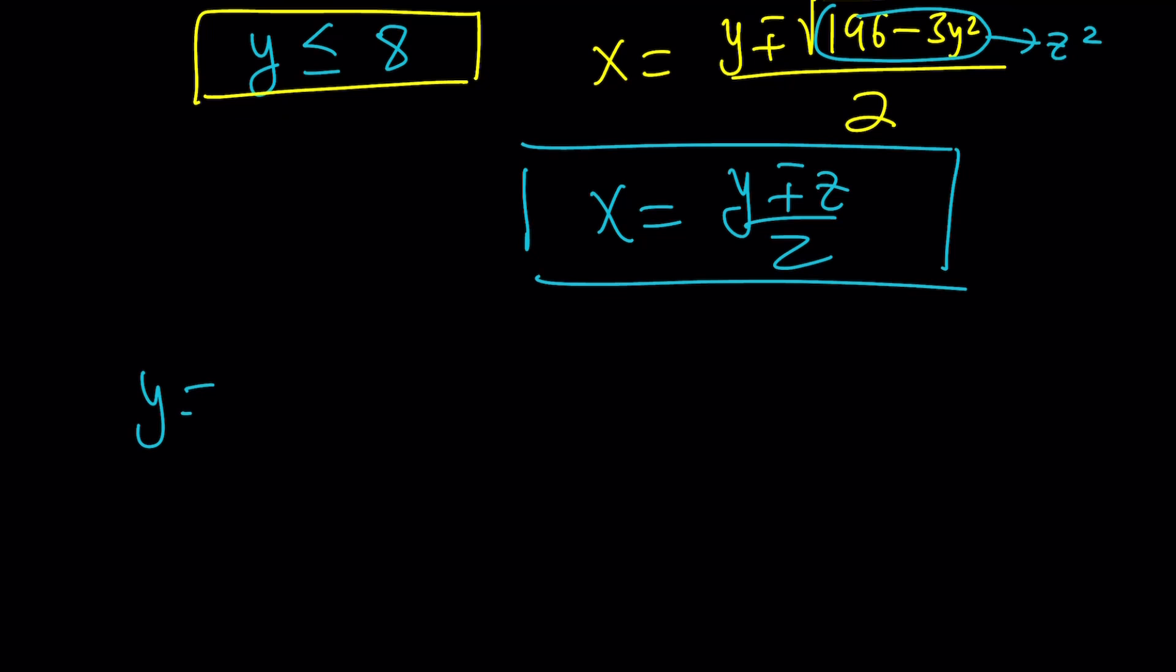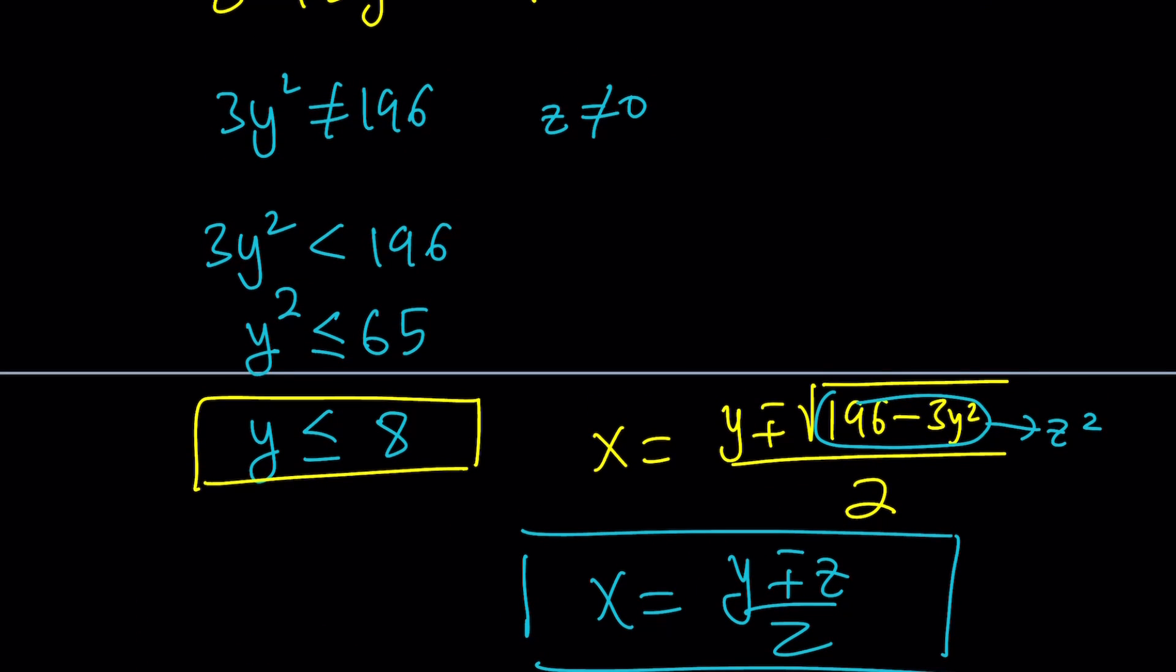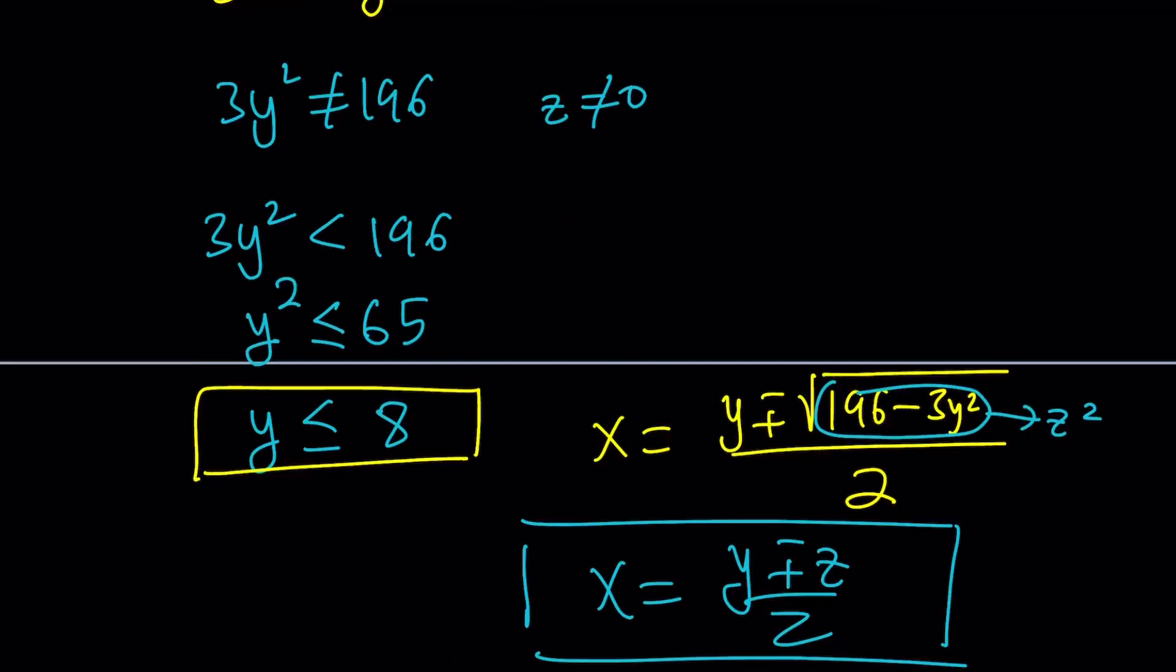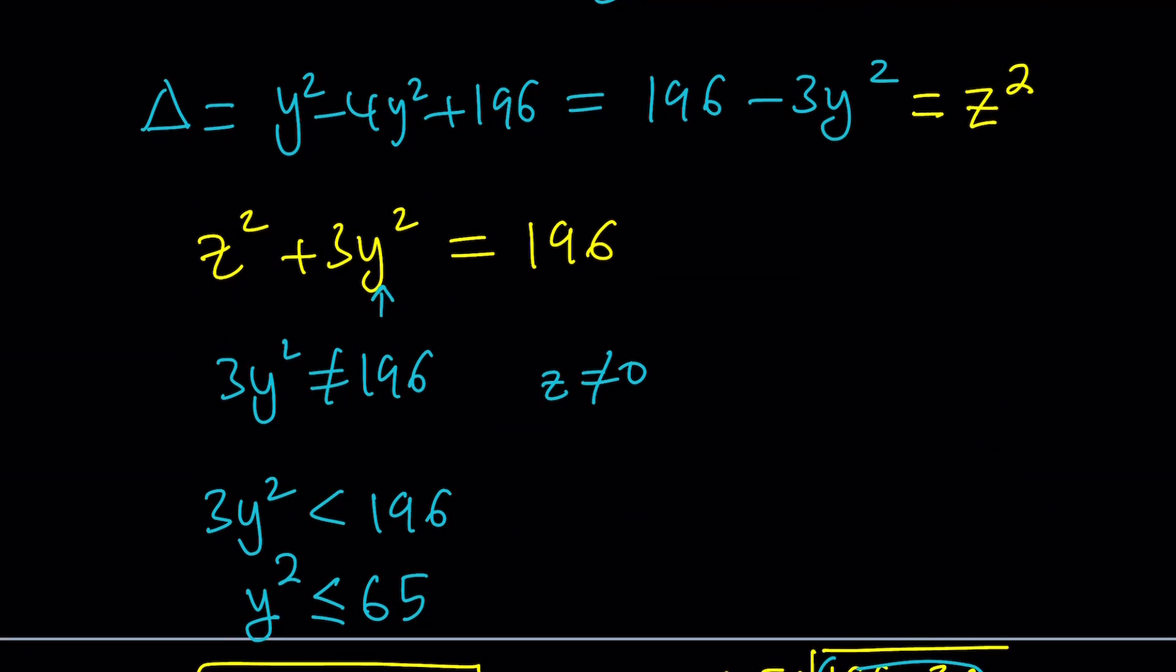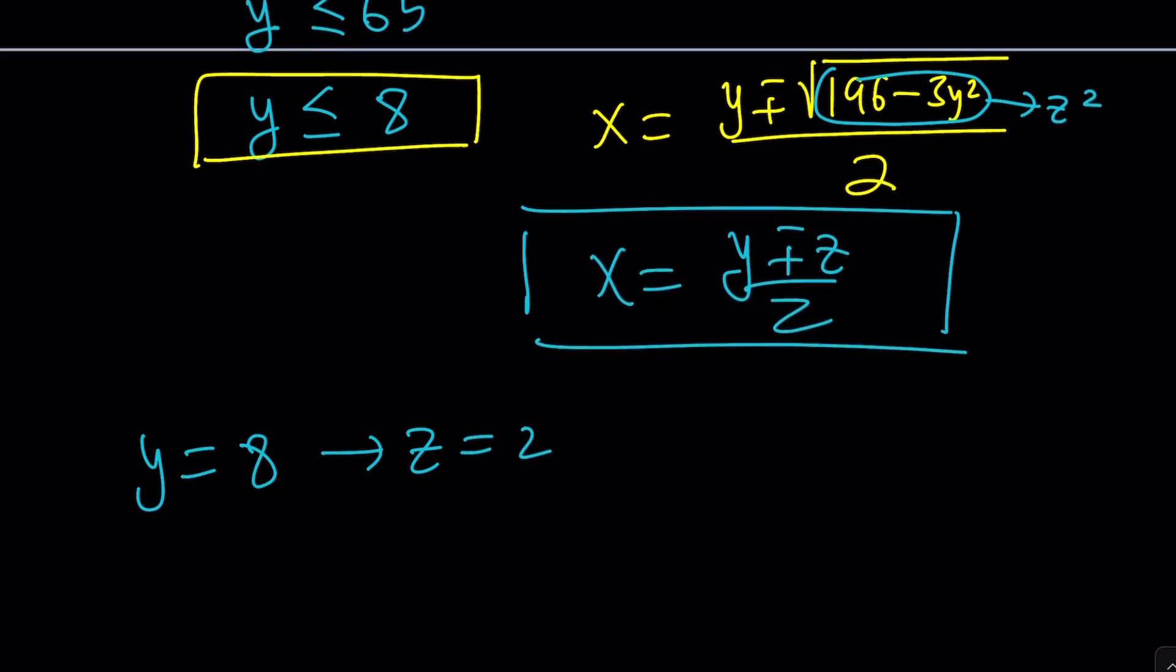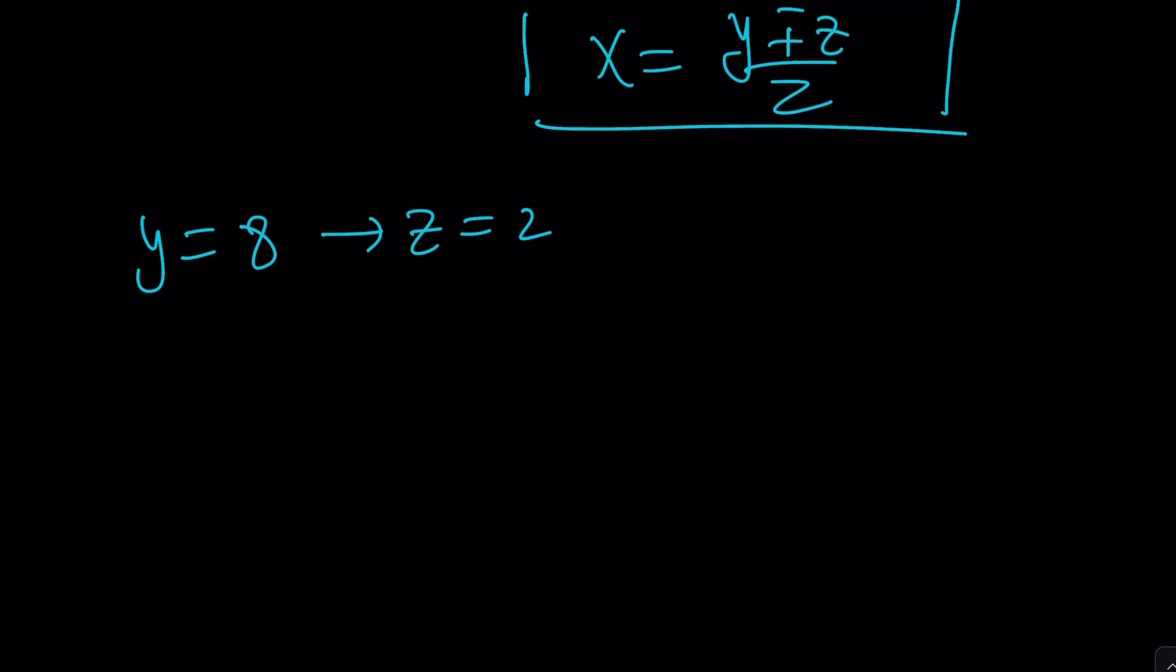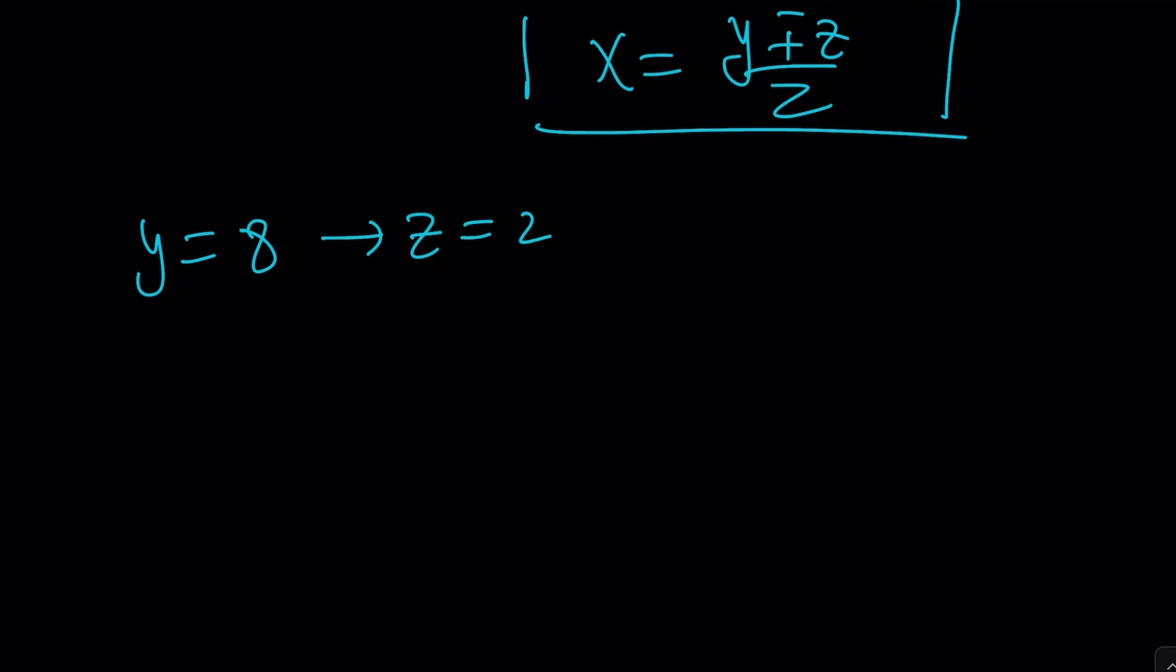So I'm going to start with y equals 8. y equals 8 gives me z equals 2. By the way, how did I get that? From this equation, if you replace y with 8, you're going to get 64 times 3 is 192. Subtract, you get 4, and z is supposed to be 2. Obviously negative 2 is a solution too, but I'm just going to go with the positive solutions here. So y equals 8 gives us z equals 2, and that gives us two solutions for x. I'm going to leave the details up to you. So x equals 5 and x equals 3. Now if y is equal to 7, then from here z is going to be 7, and that means x equals 7.